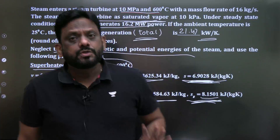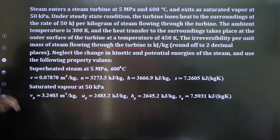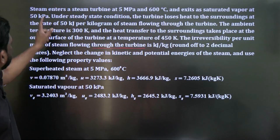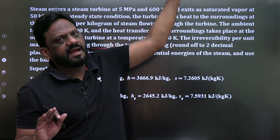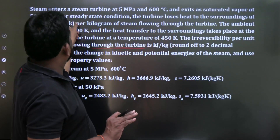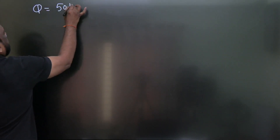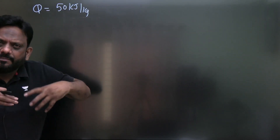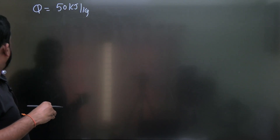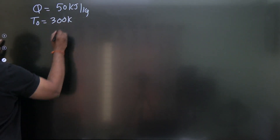Now the second question — same scenario but different. Steam enters a turbine at 5 MPa, 600°C and exits as saturated vapor. Under steady conditions, the turbine loses heat to surroundings at 50 kJ/kg. Ambient temperature is 300 K.